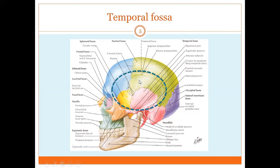The floor of the temporal fossa is formed by four bones: frontal, parietal, temporal, and sphenoid. At the point of articulation of these four bones you have a very interesting structure shaped like the letter H — this is the pterion. Opposite to the floor, the roof of the temporal fossa is formed by the temporal fascia, which originates from the superior temporal line and inserts into the superior margin of the zygomatic arch.